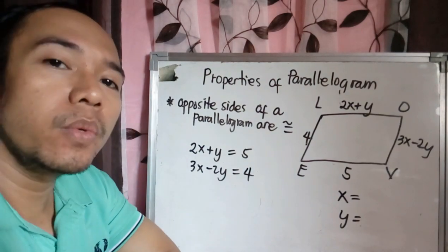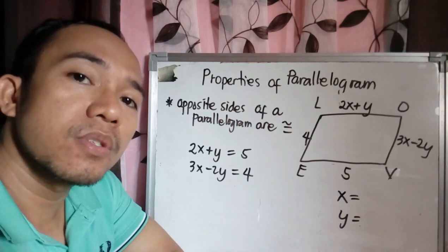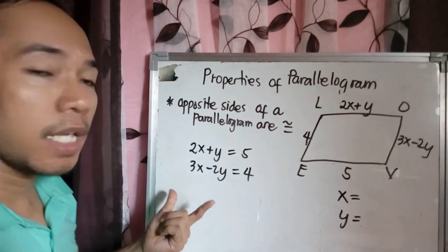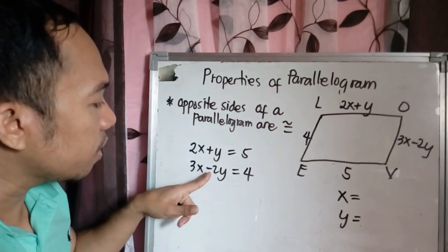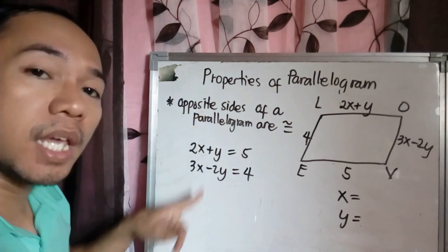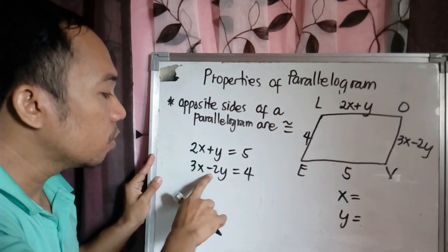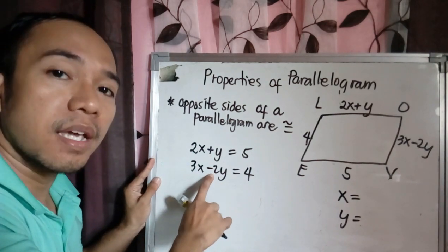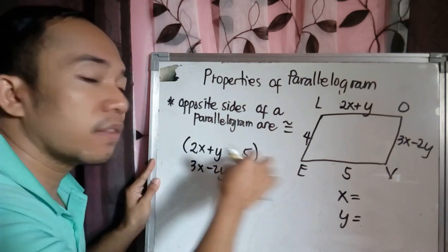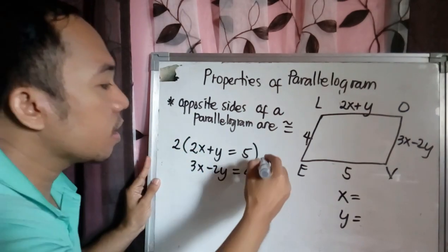Now how do we solve if you have two different equations? We can use elimination or substitution, but I prefer here elimination. Because you have here negative 2. So we just make this as positive 2 to eliminate the variable Y. So how do we make this positive 2? The opposite is negative 2, so it should be opposite. So we will multiply this, all the terms, by 2.